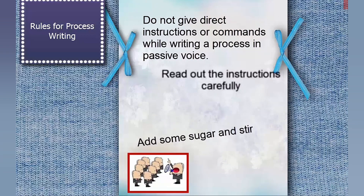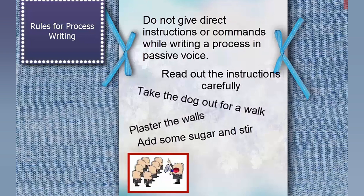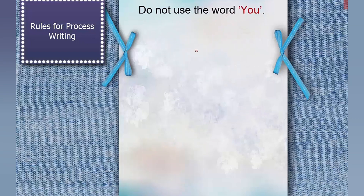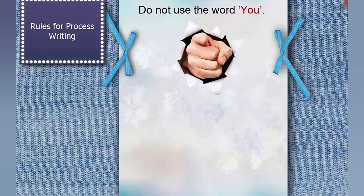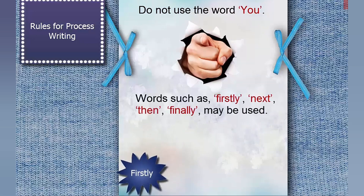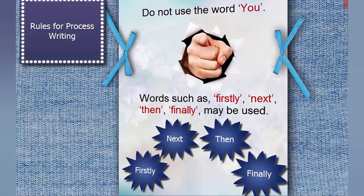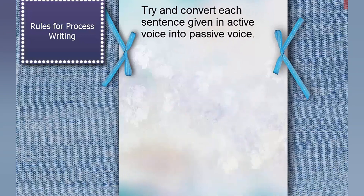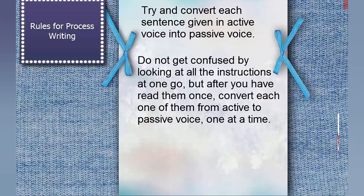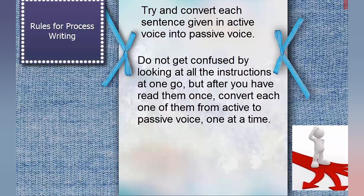Do not give direct instructions or commands while writing a process in passive voice. Do not use the word 'you'. Words such as firstly, next, then, finally may be used. Try and convert each sentence given in active voice into passive voice. Do not get confused by looking at all the instructions at one go; after you have read them once, convert each one from active to passive voice one at a time.